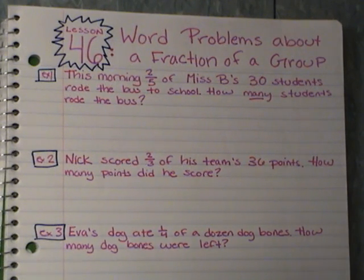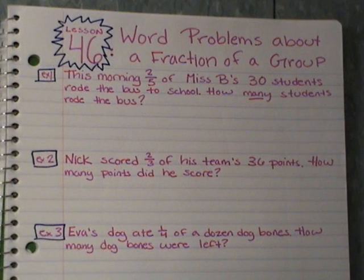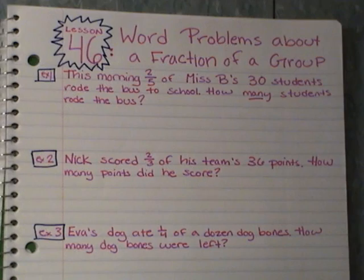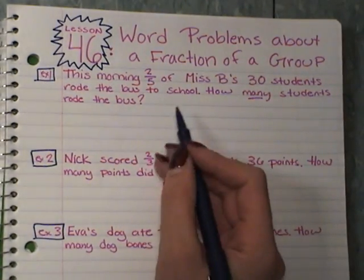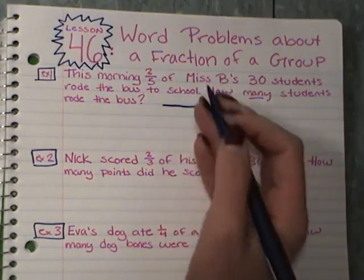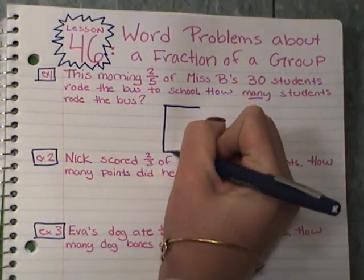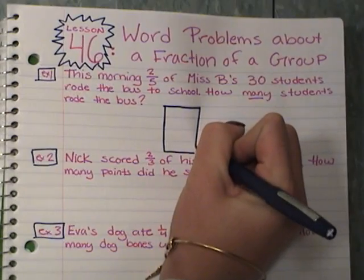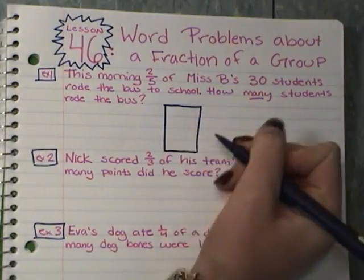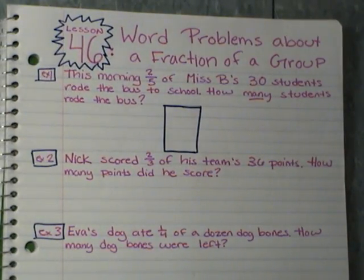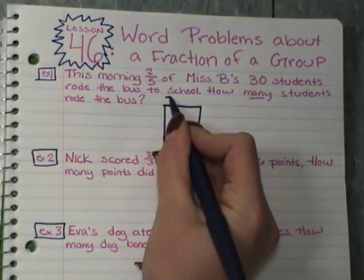Looking at the first problem, it says: this morning two-fifths of Miss Brown's 30 students rode the bus to school. How many students rode the bus? What I'm going to do is draw a rectangle to represent my 30 students, and I'll write 30 students up here.